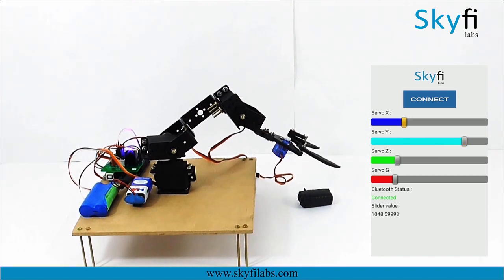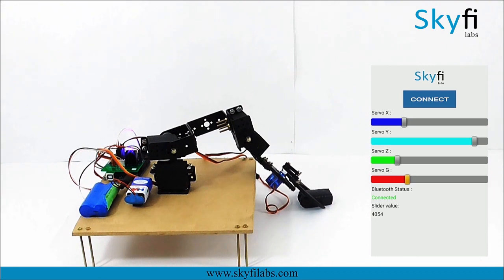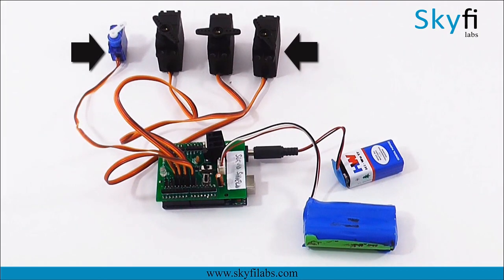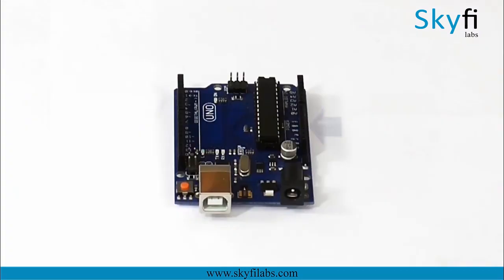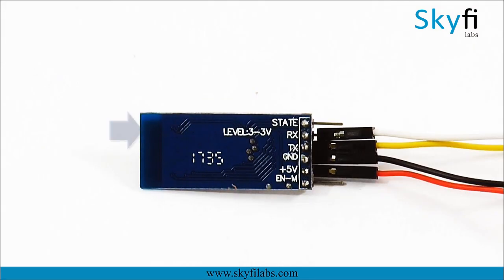As a part of this project, you will learn about the different systems in a robotic arm such as the servo motors which act as the actuators, an Arduino board which is used for processing information, and a Bluetooth module which enables communication with your phone.